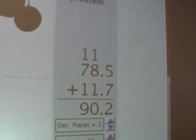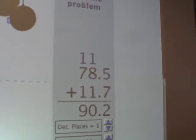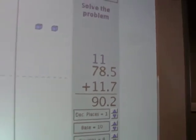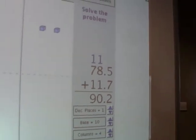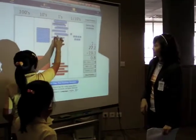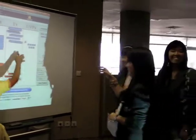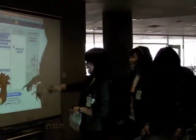And what's happened? Now the answer: 78.5 plus 11.7 equals 90.2. That's the answer in the last one. It's okay. You can all have a turn.